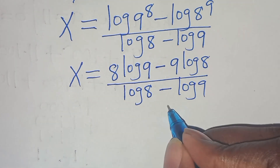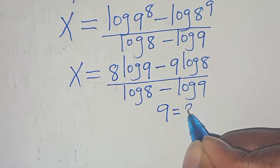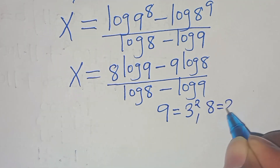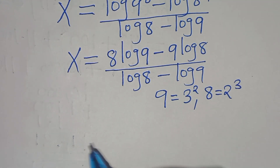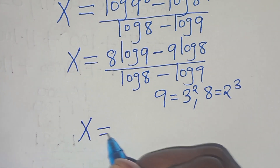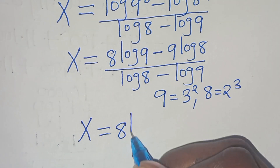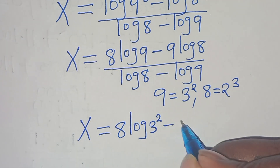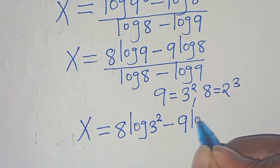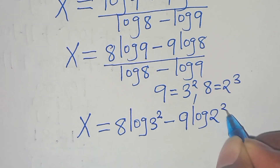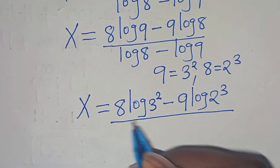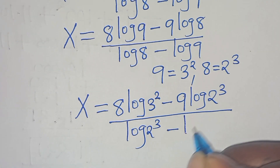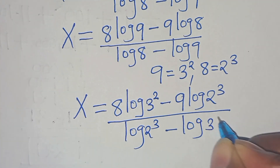We can express 9 as 3 to the power of 2 and 8 as 2 to the power of 3. Substituting, x equals 8 log(3 squared) minus 9 log(2 cubed), divided by log(2 cubed) minus log(3 squared).